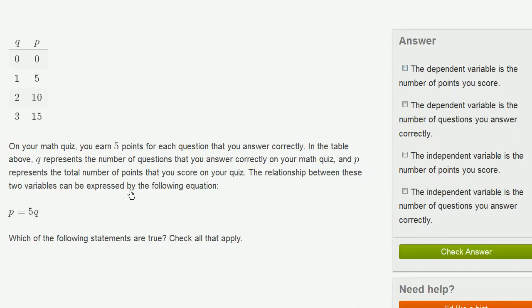It's not like somehow the teacher says, you got 15 points, and now you have to get exactly three questions right. It's the other way around. The number of questions you get right is the independent variable, and that's driving the number of points you score. So the number of points you score is the dependent variable.